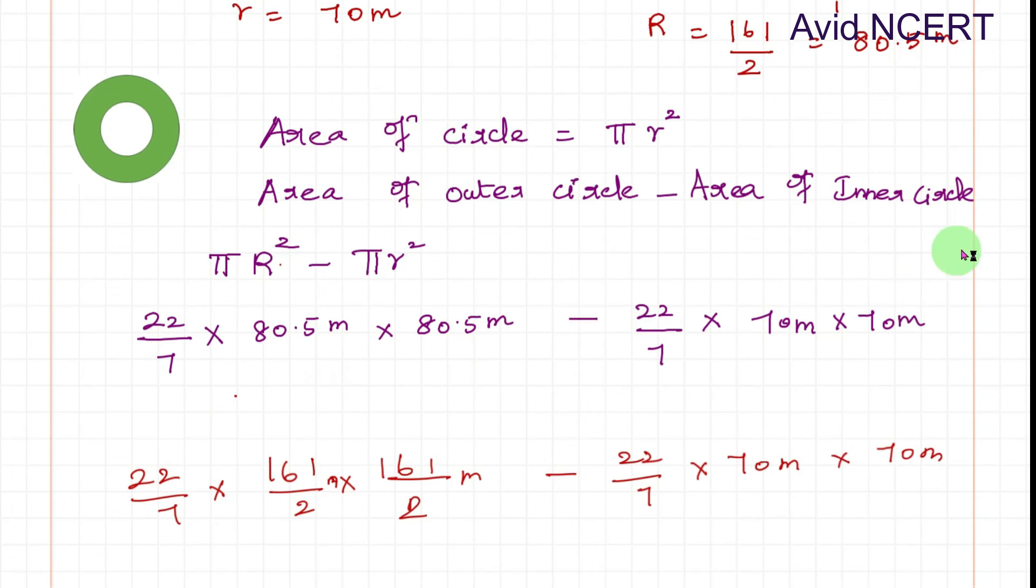If you are doing with this method, the answer would be 4966.5 meter square. And if you are going to do with this method, the answer would be 9933 by 2 meter square. Anyways, both are the same.